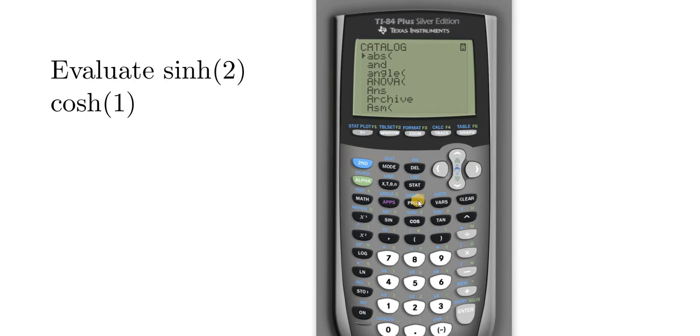That's going to be right here where it says program. I'm going to hit it. And now I'm going to scroll down and look for cosh. Hit enter. And then 1, parenthesis and enter.